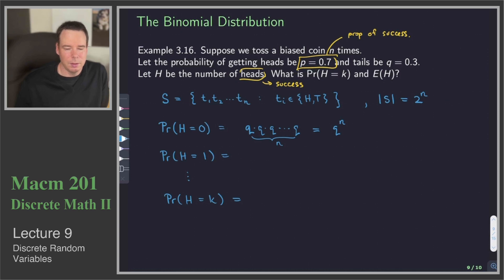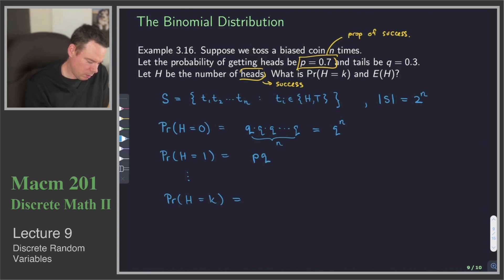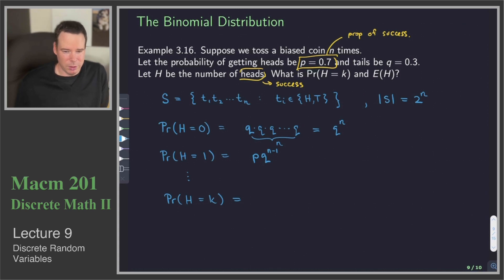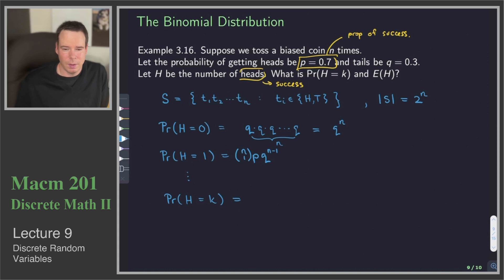How do we get one head? What's the probability of getting a head in the first spot and then tails for the rest? To get a head in the first spot means we've got probability p, so it's p times q to the n minus one. But we also get this for the probability that a head occurs in the second spot, third spot, etc. So we add these together for all the different places the head can occur. Of the n spots, there are n choose one places for the head to occur, so the probability is n choose 1 times p times q to the n minus one.